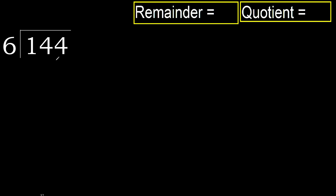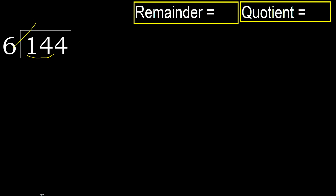144 divided by 6. 1 is less, therefore next. 14 is not less, therefore with 14, 6 multiplied by which number is nearest to 14?